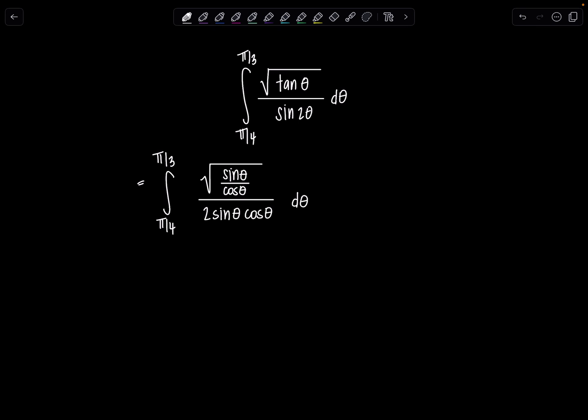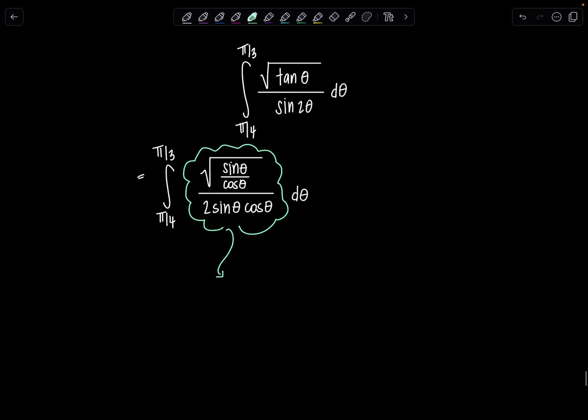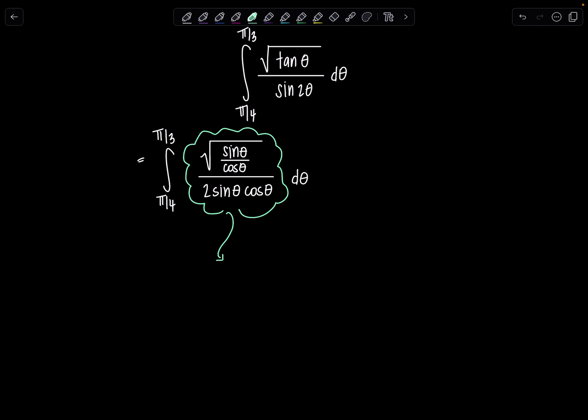The integrand is going to take a lot of work to clean up, so I'm just going to do it off to the side. A lot of this is just algebraic manipulation. So I have that one half. I'm going to split this radical up in the numerator. So I have rad sine theta over rad cosine theta and then divided by that sine theta cosine theta means we're multiplying by 1 over sine theta cosine theta.